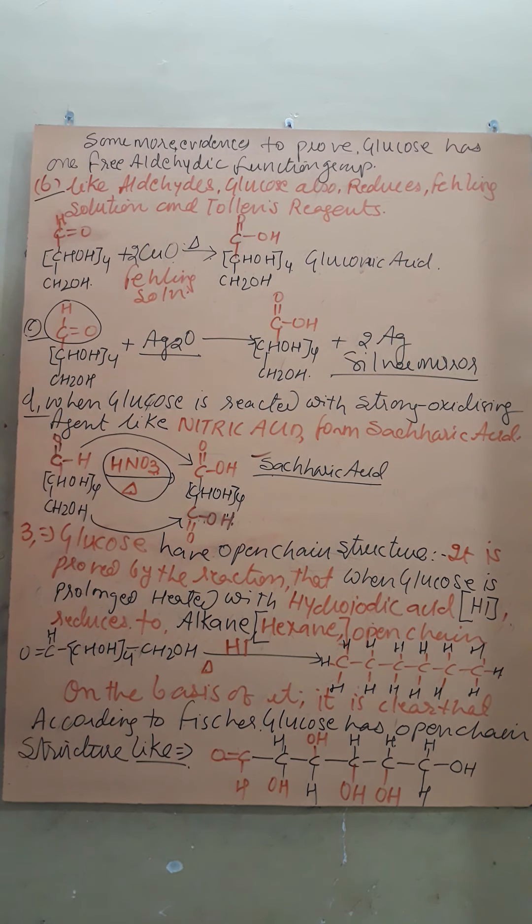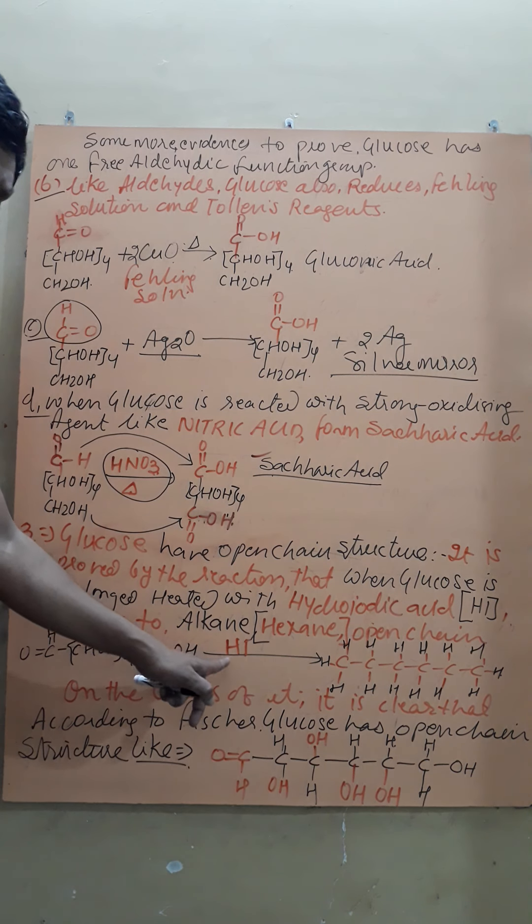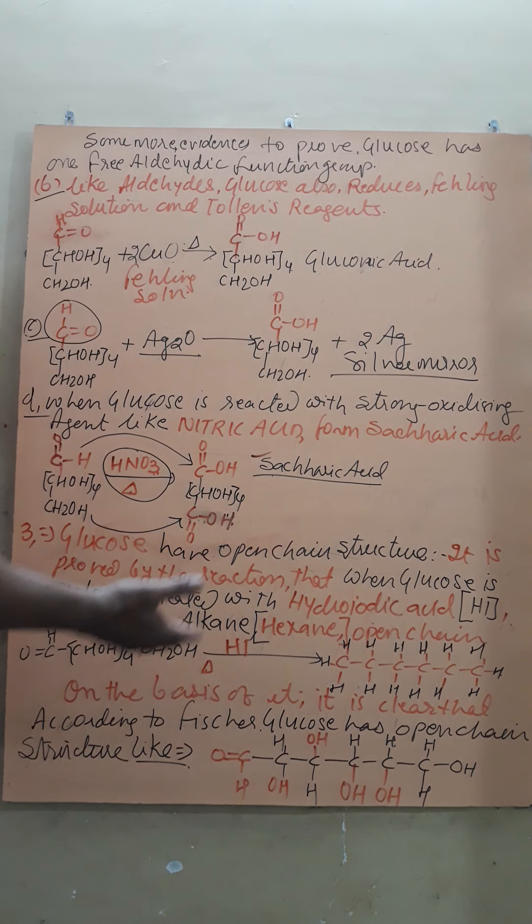Now the third property to support that glucose has open chain structure. You know that any compound having a free aldehyde group, when reacted with HI - and HI is a strong reducing agent - it can reduce the aldehyde group containing compound into normal alkane, that is open chain alkane.